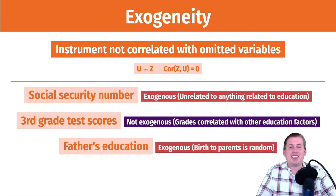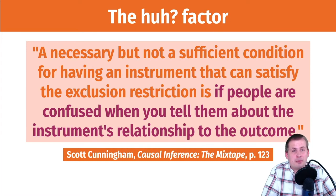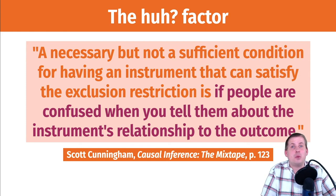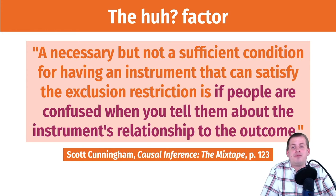Proving exogeneity and the exclusion principle is really, really hard because there are tons of ways that an easy instrument like father's education is connected to everything else you care about. This is why, as you read in the Causal Inference Mixtape, Scott Cunningham says that if you want to have a good instrument, it has to be weird. People need to be confused when you tell them how the instrument is related to the outcome. If it looks obvious, it's probably not a good instrument — saying father's education causes education which then causes wages seems really obvious.